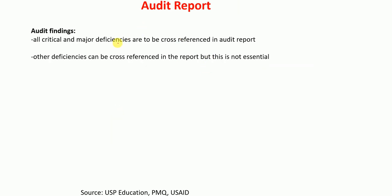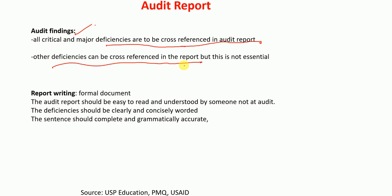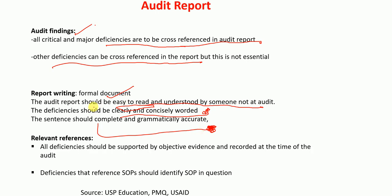The audit report should contain all audit findings, and all critical and major deficiencies are to be cross-referenced in the report. The report is a formal document and should be written in a way that is easy to read and understood by someone not present at the audit. Deficiencies should be clearly and concisely worded, sentences should be complete and grammatically accurate, and all deficiencies should be supported by objective evidence recorded at the time of the audit. Deficiencies that state a reference to SOPs should identify the SOP in question.